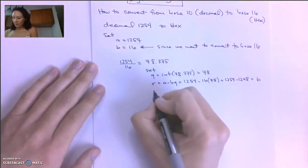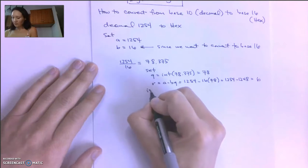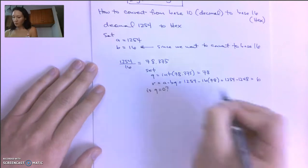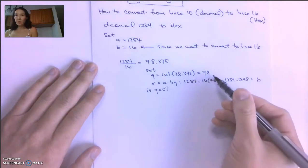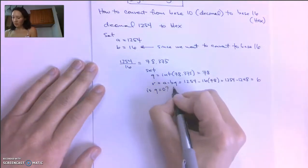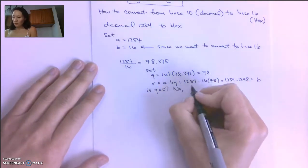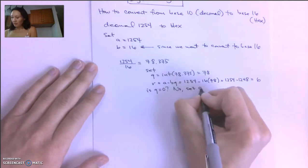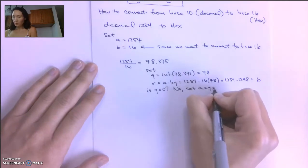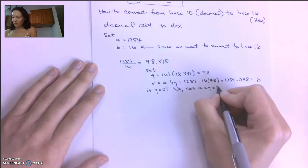Now at this point, we ask ourselves, is Q equal to 0? Our Q is 78, so the answer is no. So then what we do is set A equal to Q. And so A is now 78.